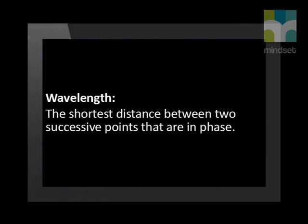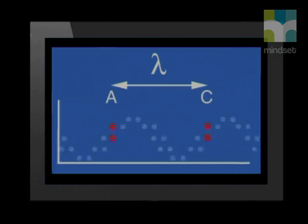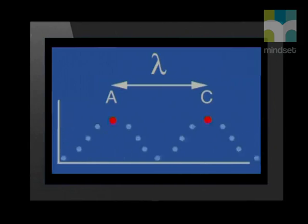Let's join Shanti again for an explanation of wavelength. The wavelength is the shortest distance between two successive points that are in phase. The wavelength of the wave is the distance from point A to point C — these are two successive points that are in phase. And you can see that it doesn't matter at which part of the cycle we decide to measure the wavelength; it is always the same distance.